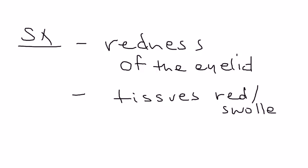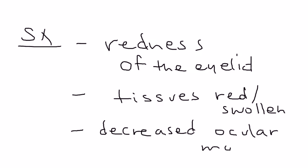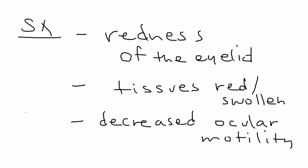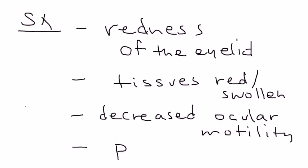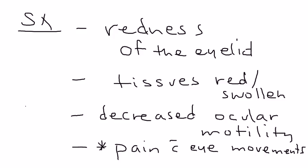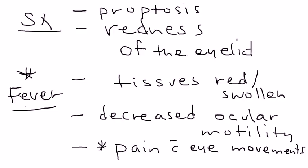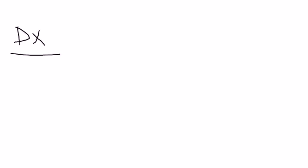In addition, you're going to have decreased ocular motility — eye movements will be compromised. As you go down the list, things get more and more severe. There's also eye pain and pain with eye movements. Anytime a clinical vignette mentions pain with eye movements, that's significant. You can also have proptosis, also known as exophthalmos, where the eye protrudes outward. Fever is another severe finding — pain with eye movements and fever together should make you think of orbital cellulitis.